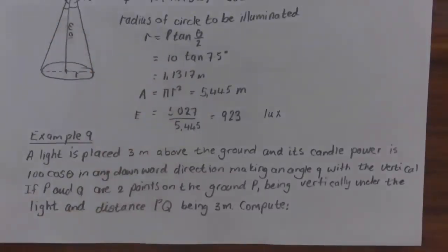Example 9: A light is placed 3 m above the ground with candle power 100·cos(θ) in the downward direction. P and Q are two points on the ground; P is vertically under the light and the distance PQ is 3 meters.